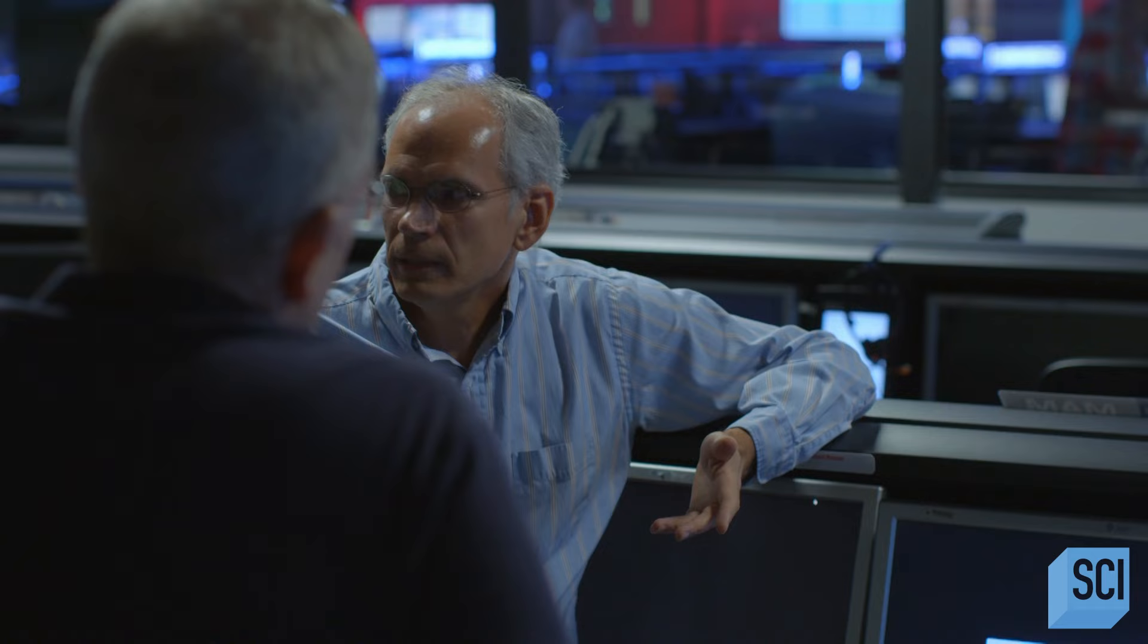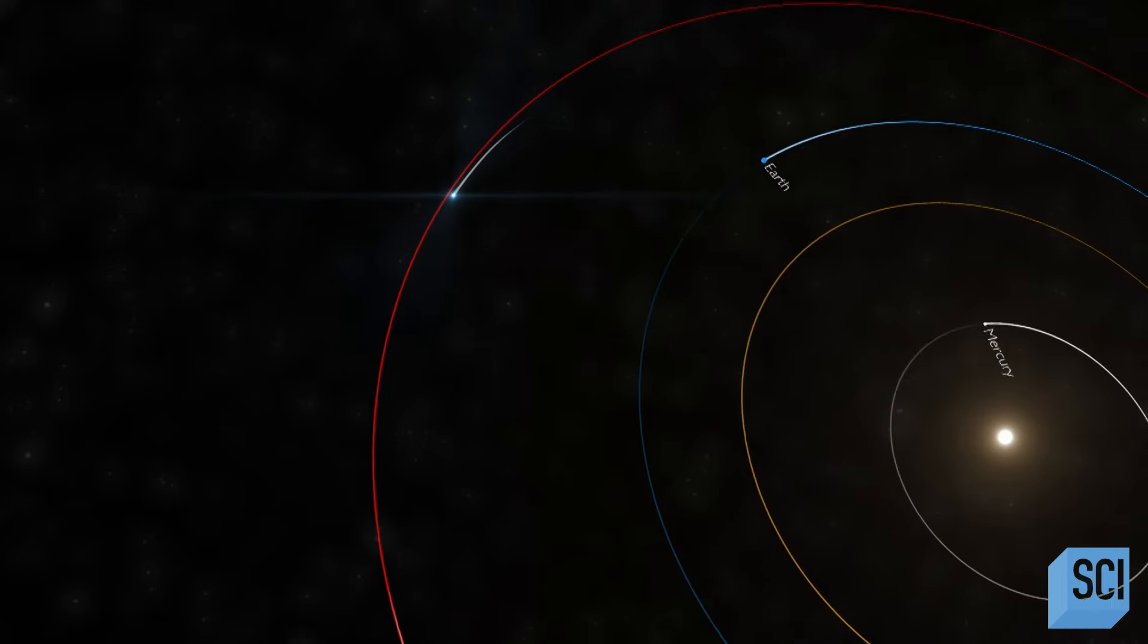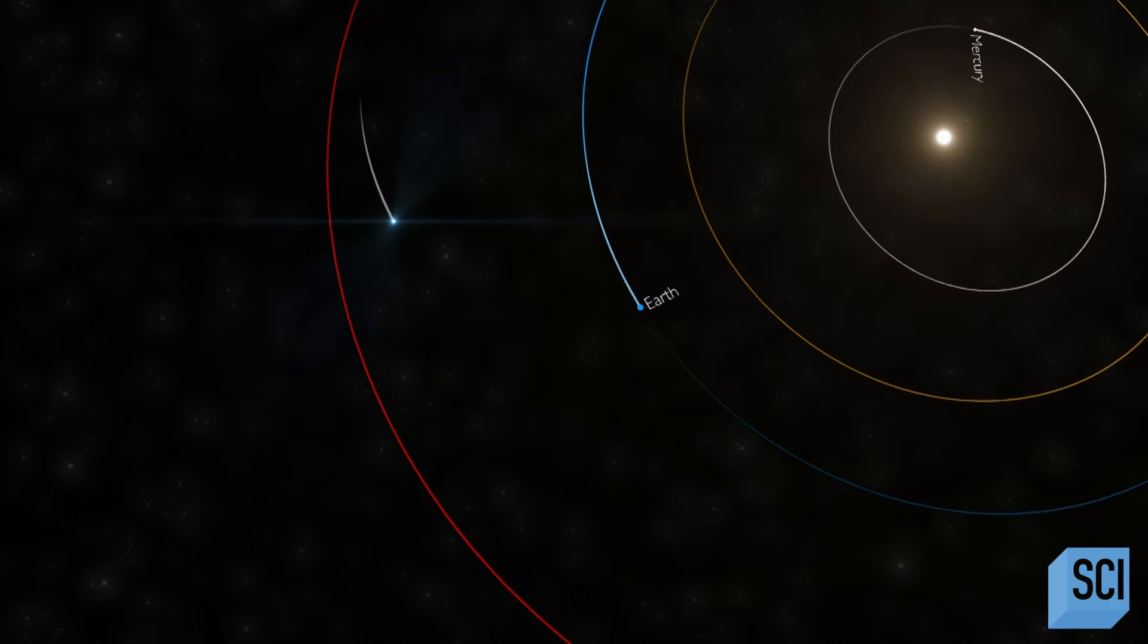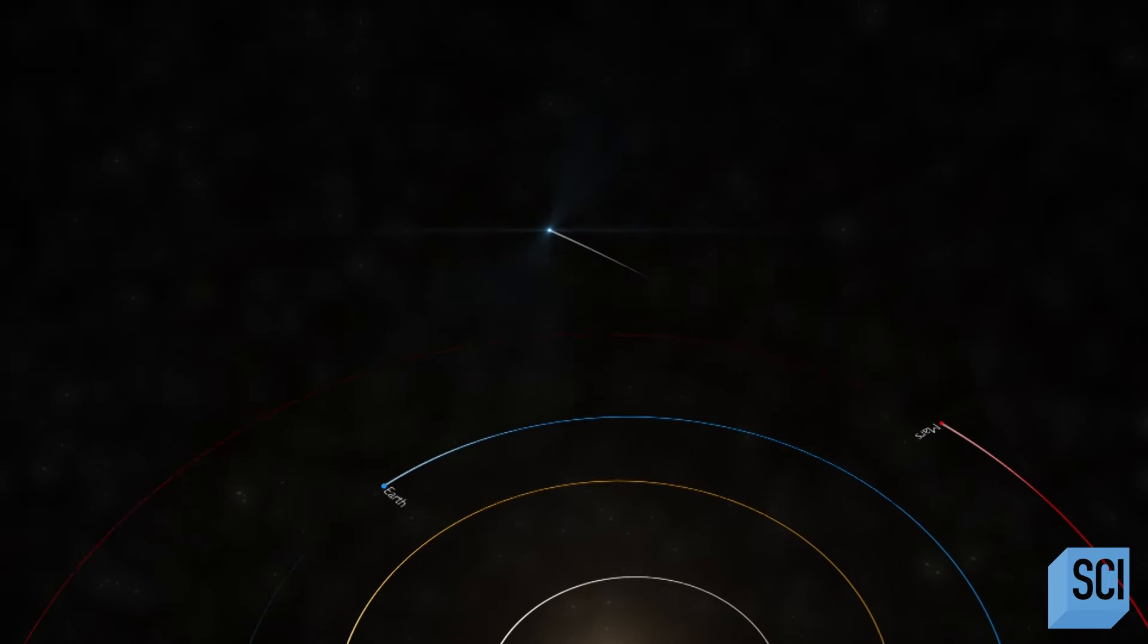We had a Titan IV-B launch to get us away from the Earth, but it still wasn't quite enough to make it all the way to Saturn. So we had two Venus flybys, gravity assists from each of those, an Earth gravity assist, and finally we got a Jupiter gravity assist, and that got us to Saturn.